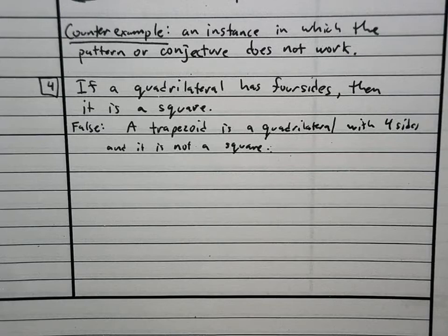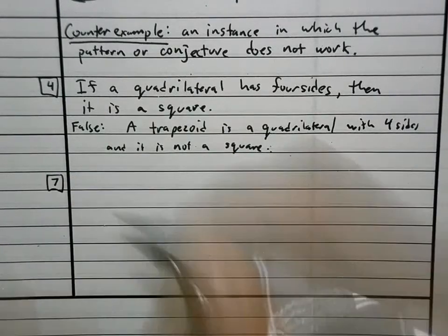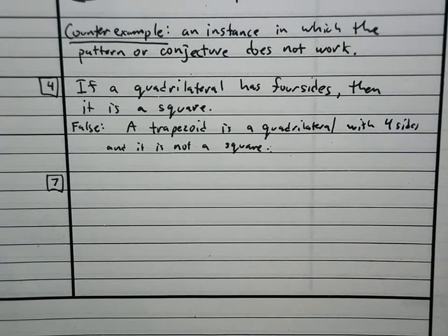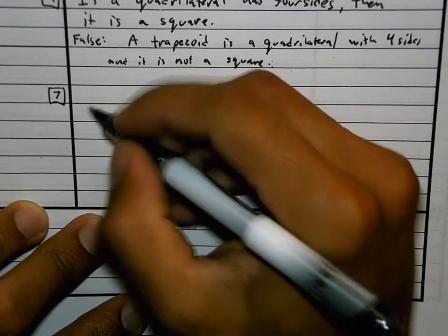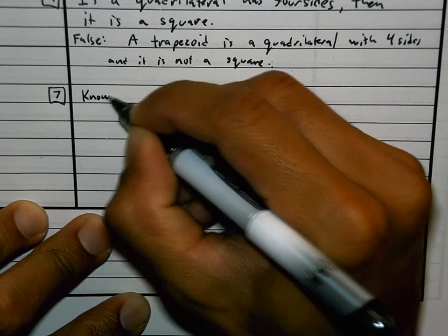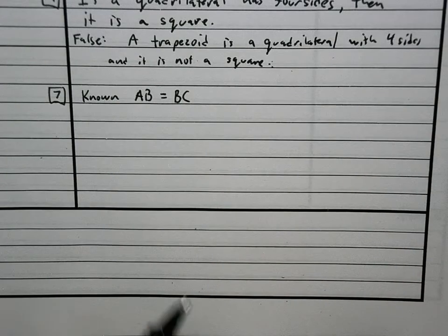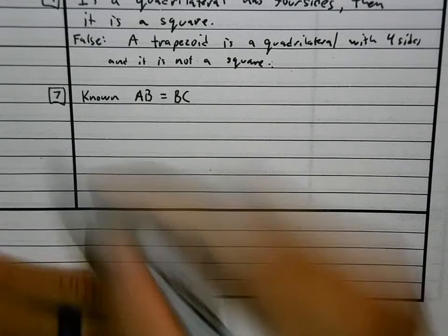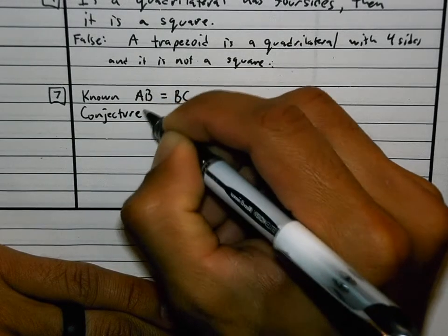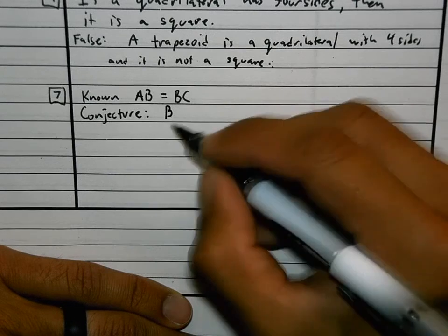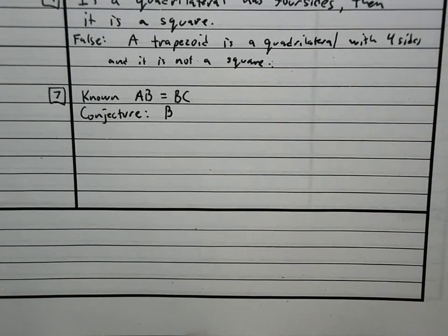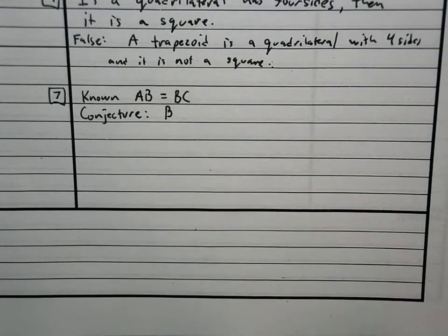The last one that I'm going to do with you is number 7. And this one's very difficult, which is why we're going to do it together. This is what number 7 says. AB is equal to BC. Known. AB is equal to BC. Conjecture. I didn't define conjecture because you don't really need to know it, but I'll tell you what conjecture means. A conjecture is like a hypothesis in science. It's an idea. This is what I think is true. That's what a conjecture is. It's an idea that you think is true or that somebody else thinks is true.